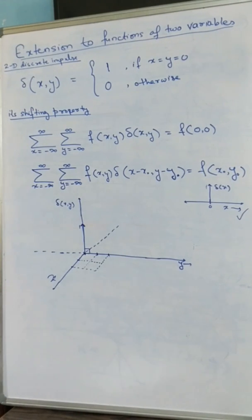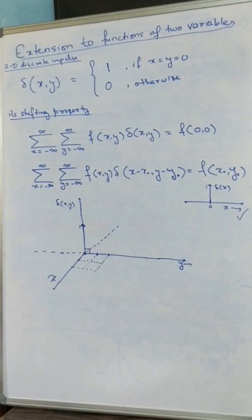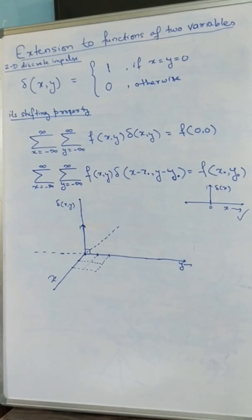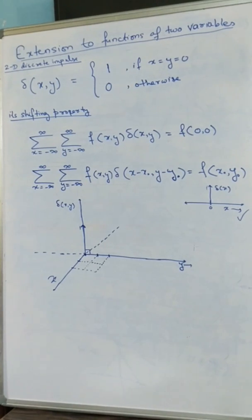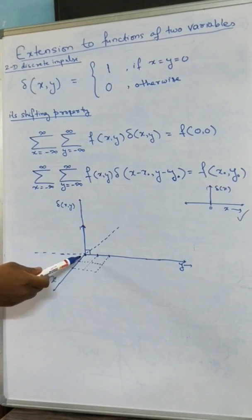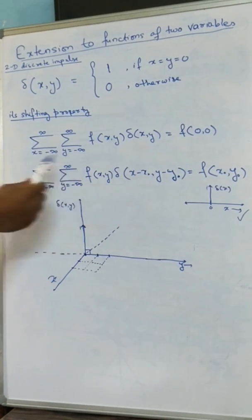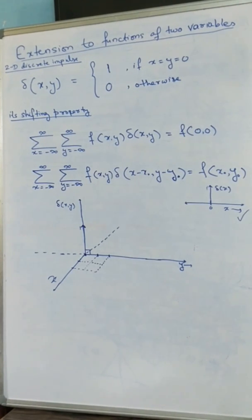To move ahead, we should discuss the shifting property of the 2D discrete impulse. The shifting property states that the summation over x from minus infinity to infinity and y from minus infinity to infinity of f(x, y) · δ(x, y) equals f(0, 0). This means the shifting property lets the function take the value at the location of the impulse — here the impulse is at x equals 0, y equals 0, so the summation gives f at the origin.